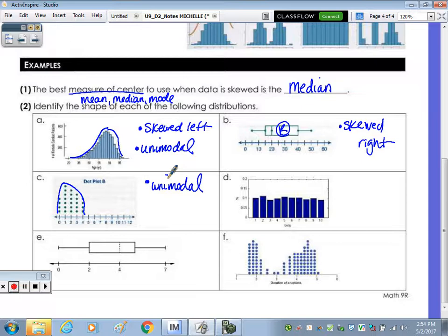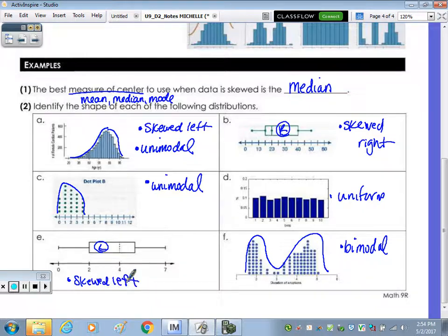What about D? Uniform. What about E? Bimodal. And the last one? Skewed left.